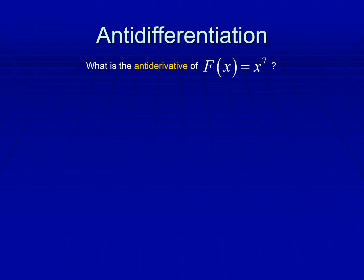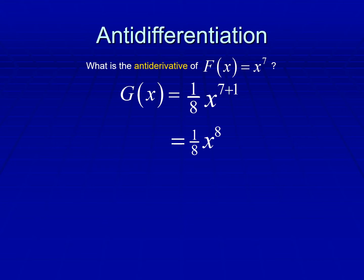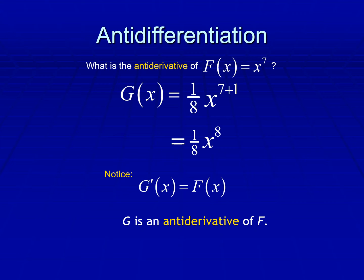So what is the anti-derivative of f of x equals x to the seventh power? We are going to take x to the seventh power, then add one to the exponent — whatever the sum, it is our denominator. So we have 1 over 8 times x to the eighth power. Note that g prime of x is equal to f of x, meaning g is an anti-derivative of f. Later on, I will explain the power rule for anti-differentiation.